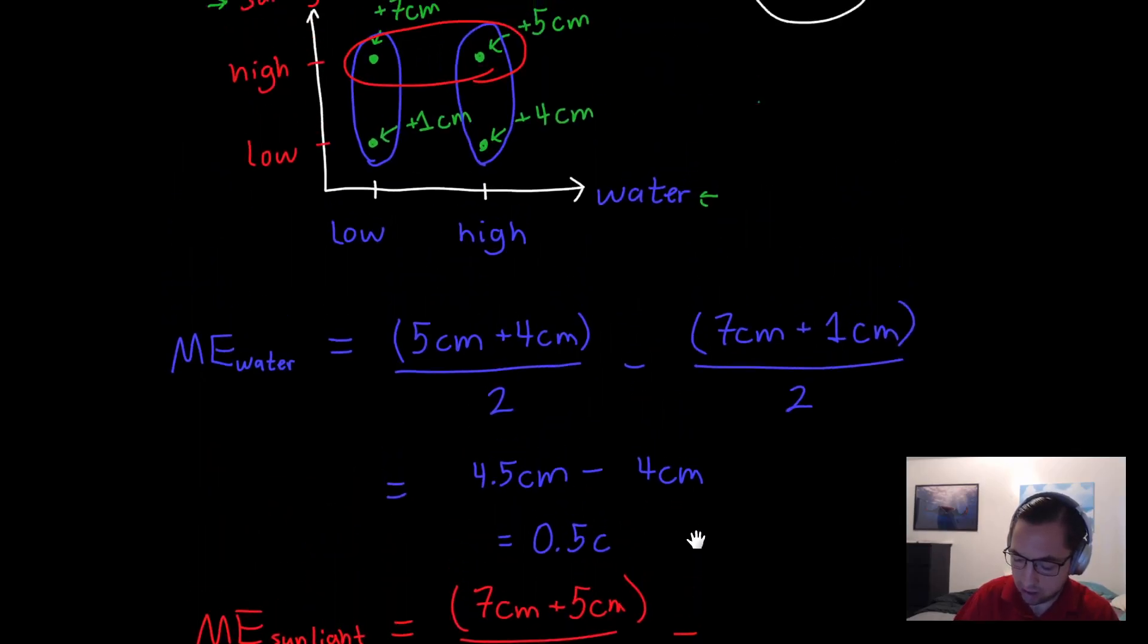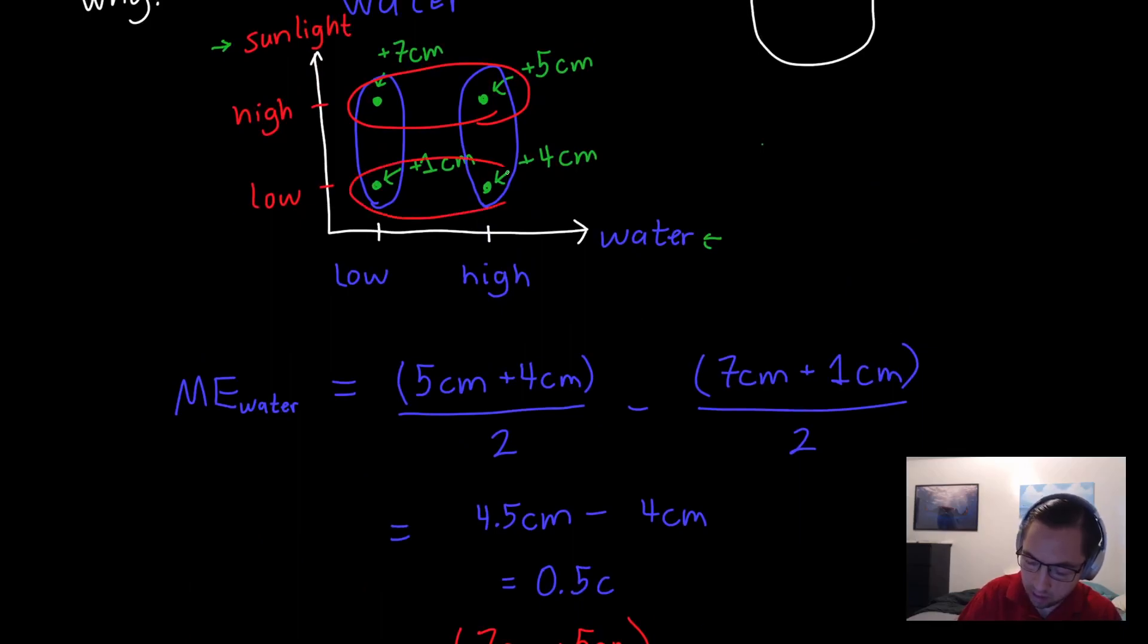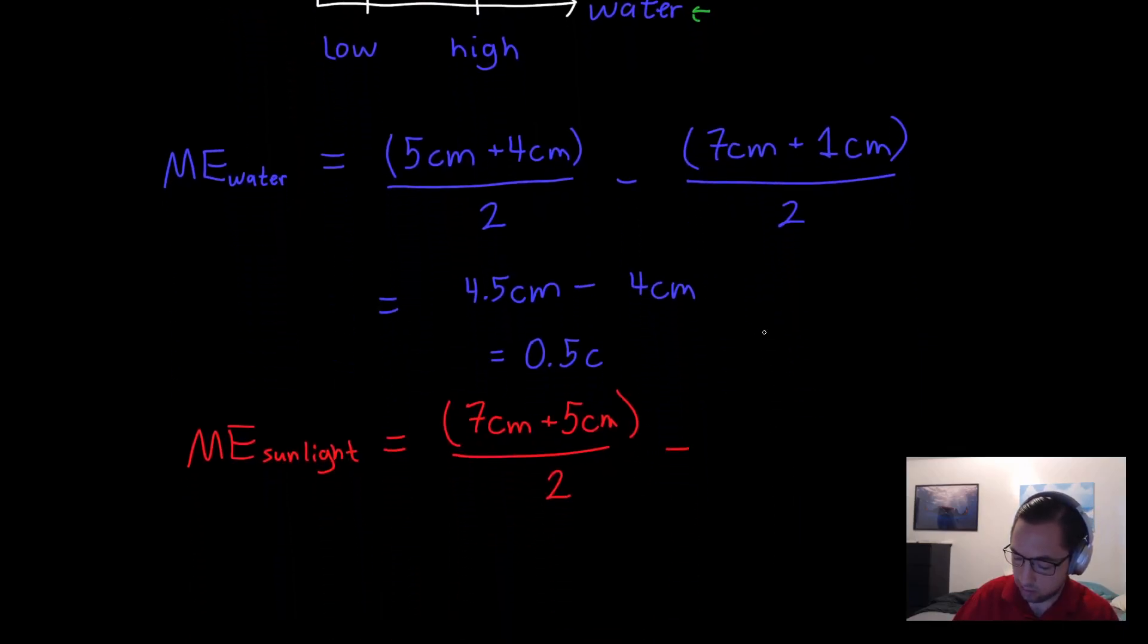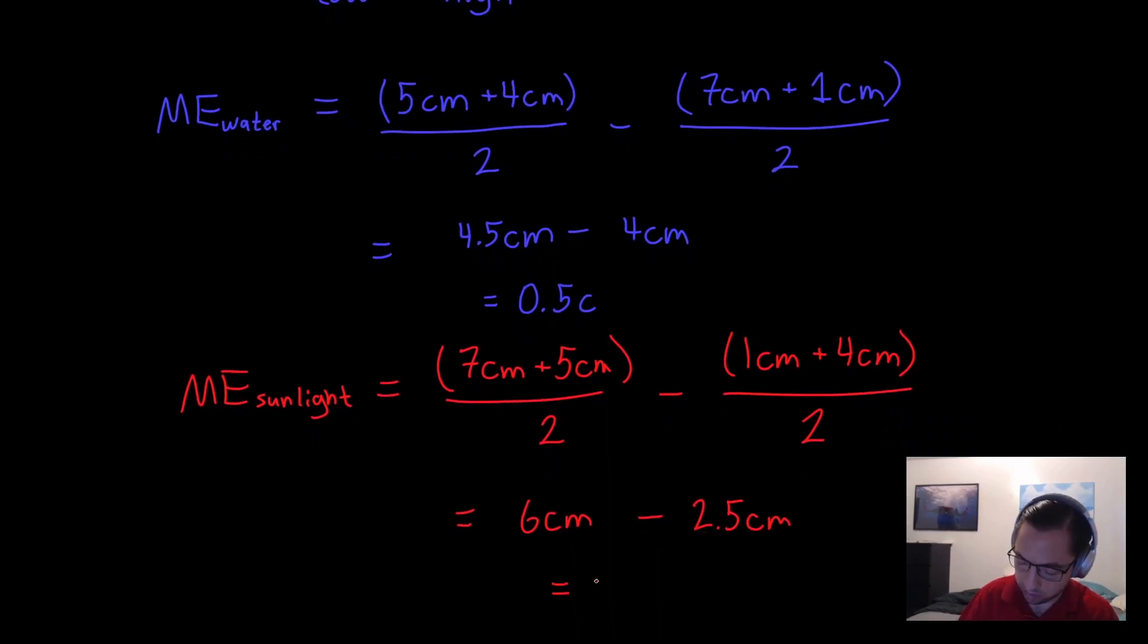And then we subtract all the values in the low condition. So one centimeter plus four centimeters over two. And so that looks like six centimeters minus 2.5 centimeters, which is just equal to 3.5 centimeters. And this is the main effect of sunlight.